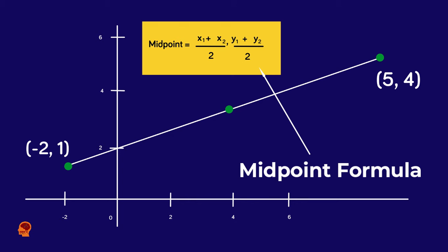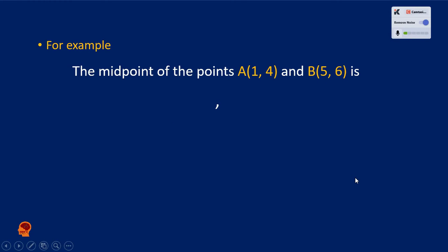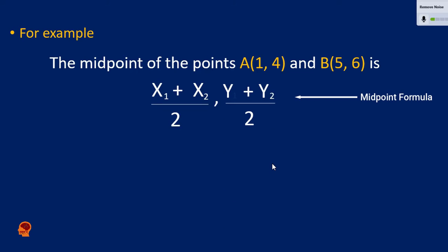This diagram shows the midpoint formula for two points: point A and point B. Now let's use the midpoint formula to calculate two points on the coordinate plane. This is the midpoint formula, shown on the screen. Now let's take an example. The first thing we're going to do is always write the formula.